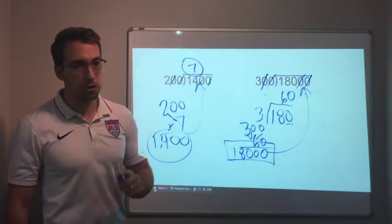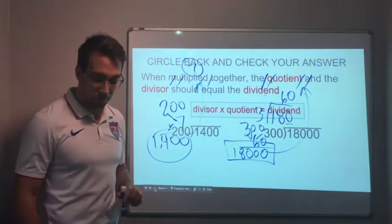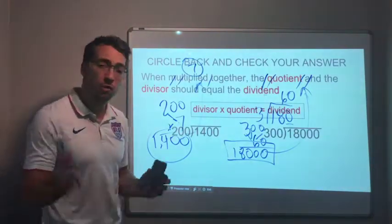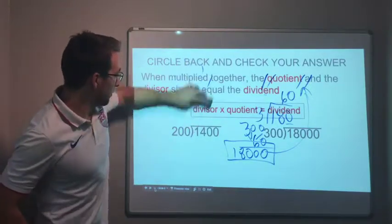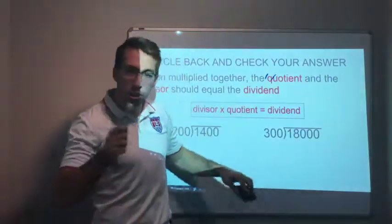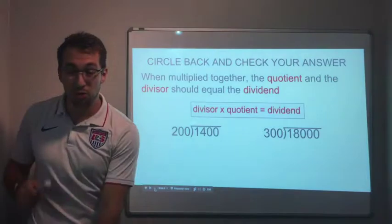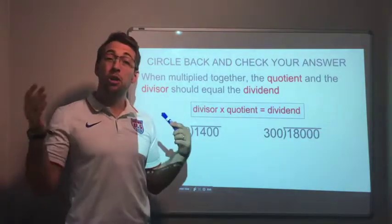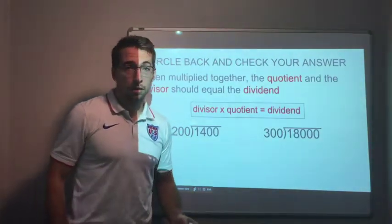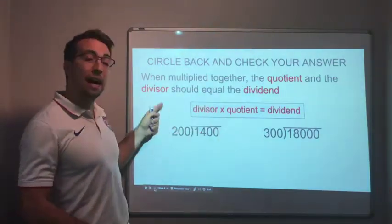This is a trick, you gotta practice this. It's really helpful. And notice every time that I solve an answer I checked it. You are not allowed to use tricks, you're not allowed to do anything without checking your answer. Division problems are great because you always get the right answer because you can always check your answer. So circle back, check your answers. When multiplied together, the quotient and the divisor should equal the dividend.